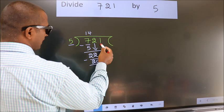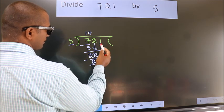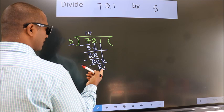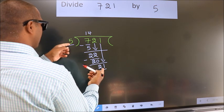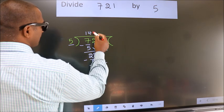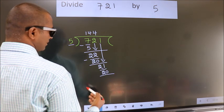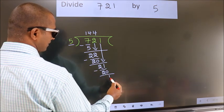After this, bring down the beside number. So 1 down, making 21. A number close to 21 in the 5 table is 5 fours, which is 20. Now we subtract. We get 1.